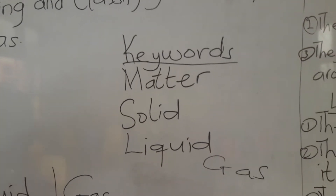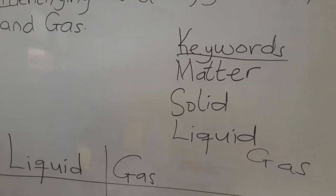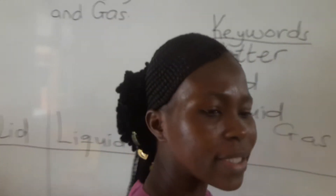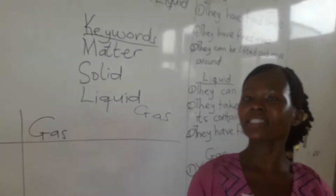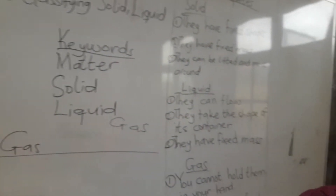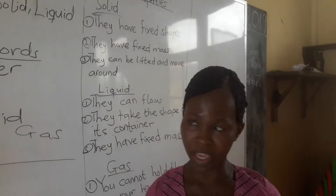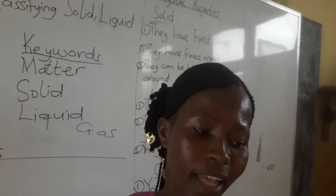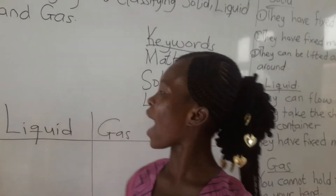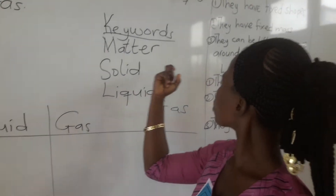When we say matter, what is matter? We say that matter is anything that has mass and can occupy space. Matter is anything that has mass and can occupy space.